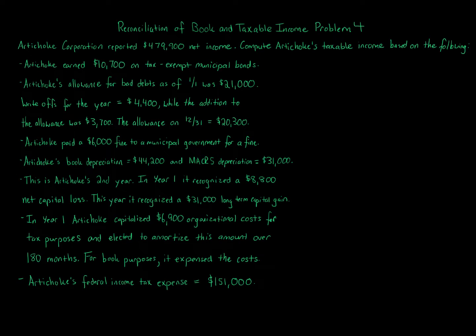Reconciliation of Book and Taxable Income, Problem 4. Artichoke Corporation reported $479,900 of net income. Compute Artichoke's taxable income based on the following information.